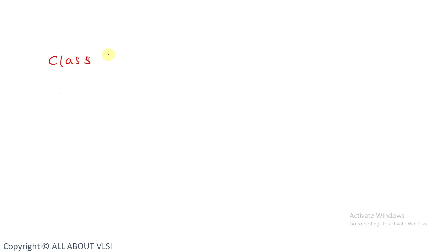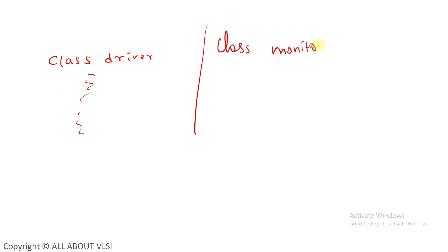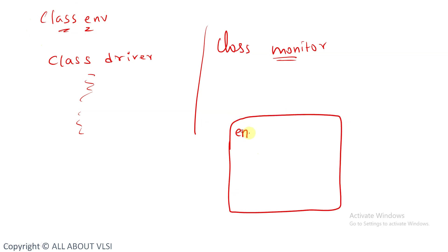Normally in SystemVerilog, when designing a test bench, we simply write a class driver with driver code and develop a monitor class with monitor code. The driver and monitor are instantiated in a class environment, and this environment is instantiated in your test. The environment contains a driver, monitor, reference model, scoreboard, and everything. This is how an SV test bench looks.